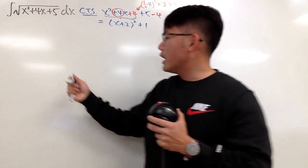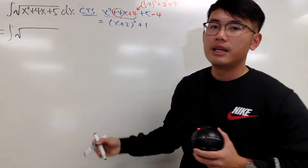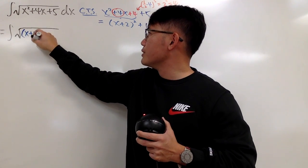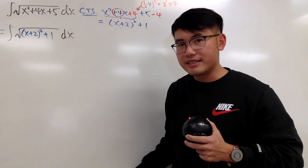All right, so as we can see, this is going to be the integral of the square root, and then the inside is this, which is x plus 2 square plus 1, and then we have that dx right here. That's nice.